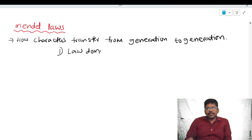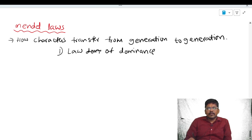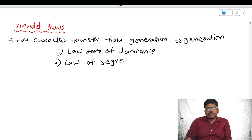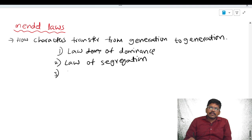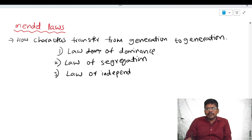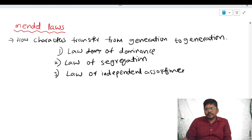The first one is called the law of dominance. The second one is law of segregation. The third one is law of independent assortment. These are the three laws explained by Mendel.